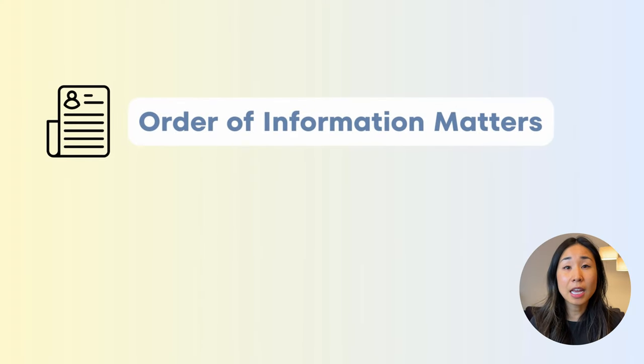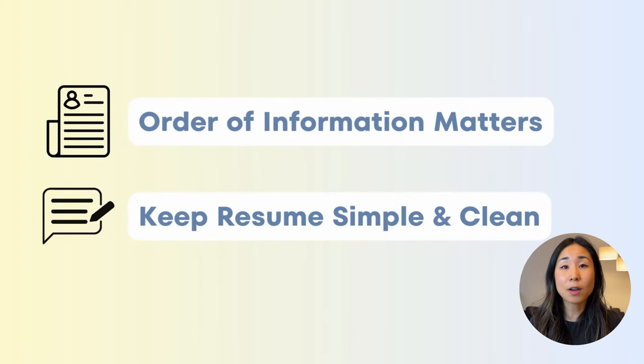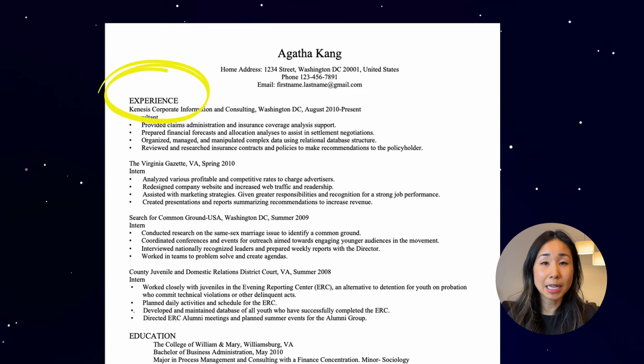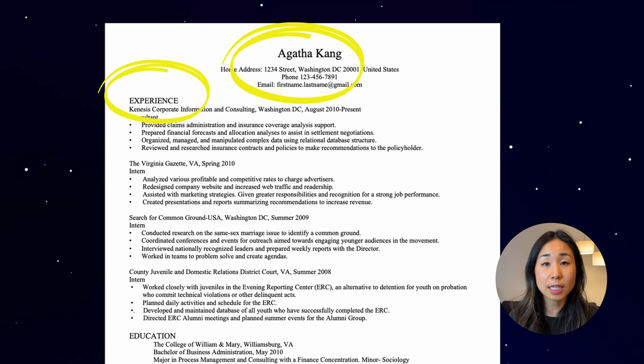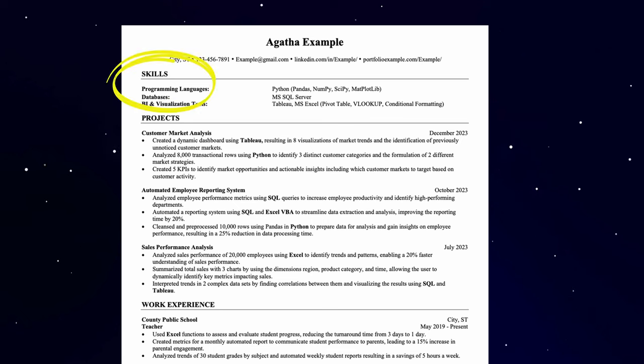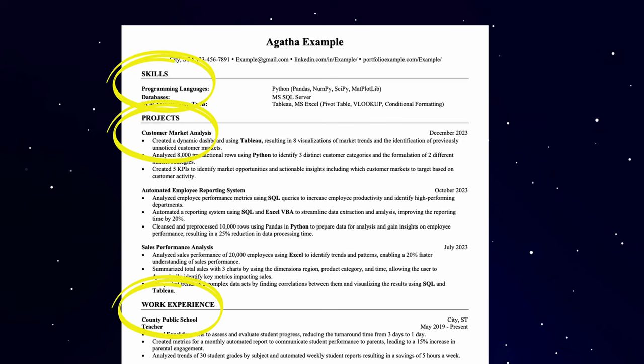The lesson here is that you want to be strategic about the order of information you're listing, and you want to keep the format really simple and clean to read. For an experienced hire, you'd want to see work experience listed immediately after contact information, but for an entry-level data analyst or someone trying to transition into the role, you want to highlight the data analytics skills first and then move on to work experience.